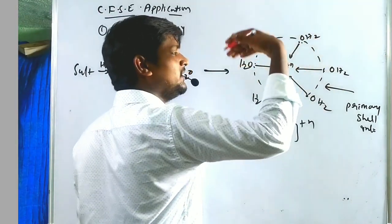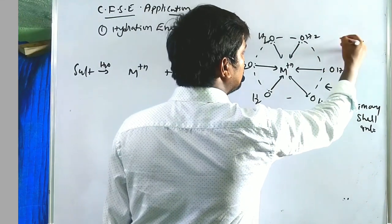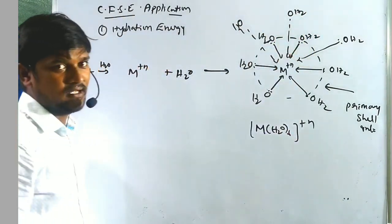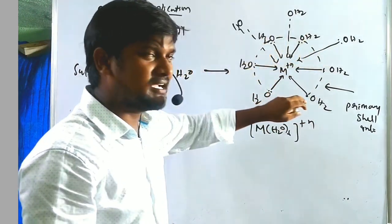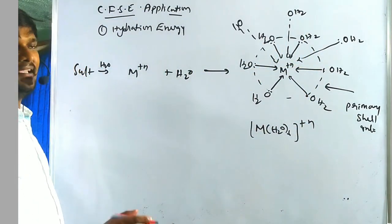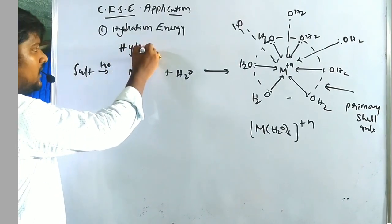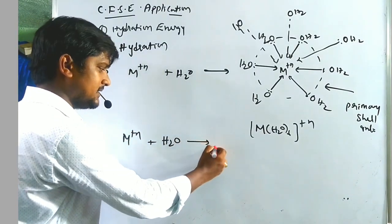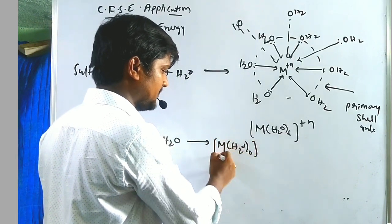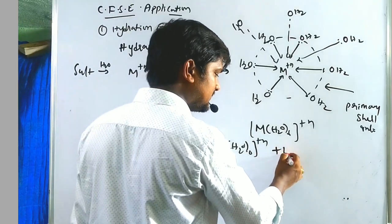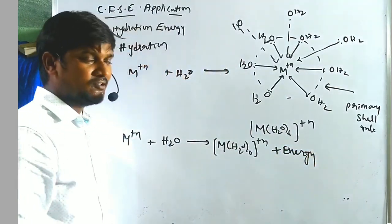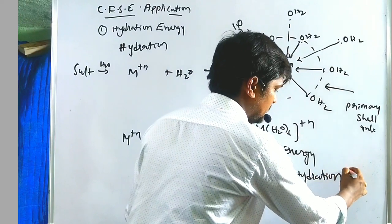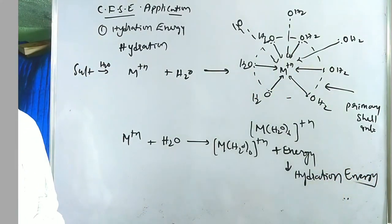It can also have secondary and tertiary shells, but we will consider the primary shell interaction. This forms a complex, and the total process is called hydration. Whenever a metal cation is hydrated, it forms a hexa-coordinated — or any coordinated — hydrated complex, and it releases some energy. That energy is called hydration energy.